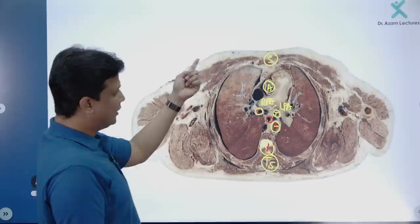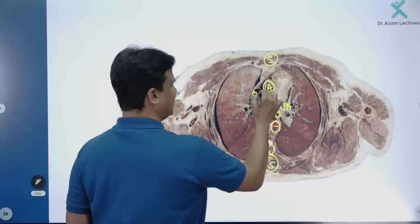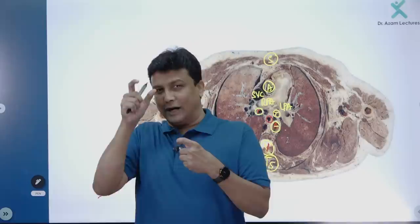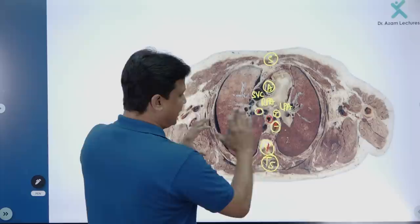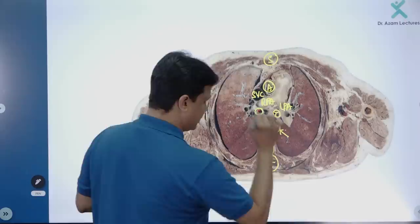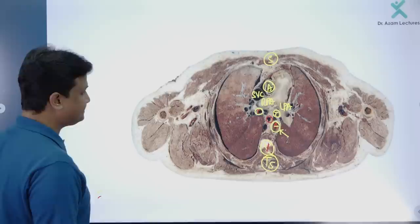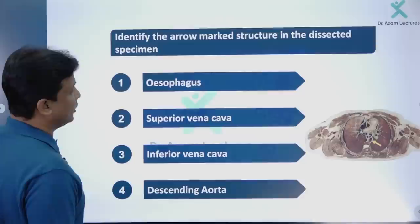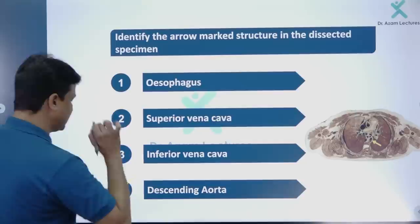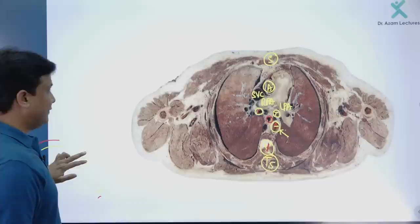Arching above the pulmonary artery is the arch of aorta — so that is the ascending aorta, arching and coming down as the descending aorta. Just to the right of the ascending aorta is the superior vena cava. In our question, the arrow-marked structure is the descending aorta — esophagus, superior vena cava, inferior vena cava, and descending aorta all identified. The right answer is the descending aorta.